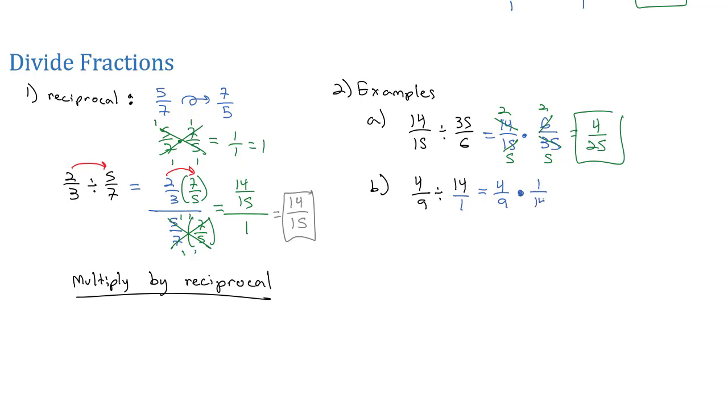and the reciprocal is 1 over 14. Some quick reducing with the 14 and the 4, both divisible by 2. 2 times 1 is 2. 9 times 7 is 63. And so, when we divide 4 ninths by 14, we get 2 sixty-thirds.